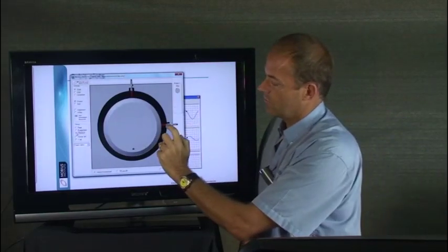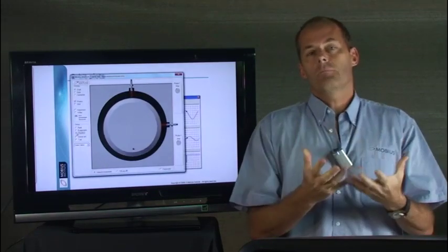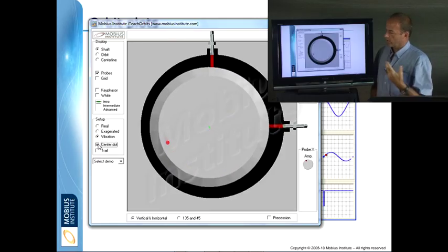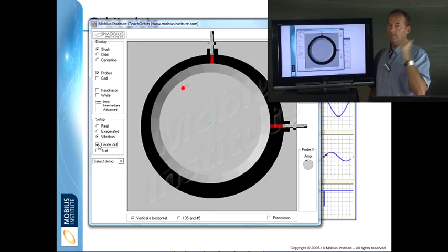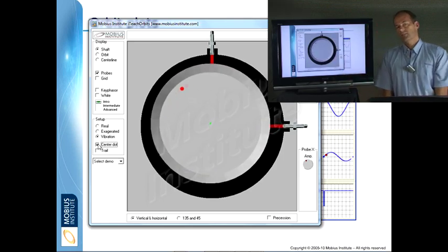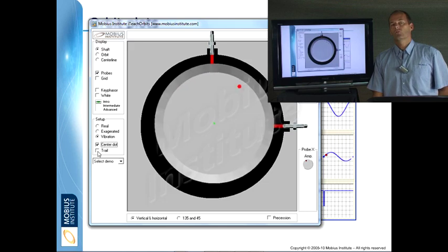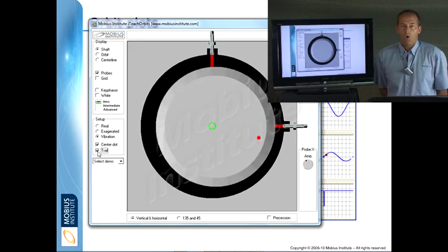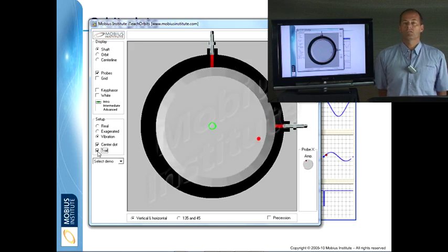Now even though we are measuring the distance between the probe and the surface of the shaft, think about it in terms of what the centre of the shaft is doing. And what I am going to do is put a little dot. You can see there is a green dot right in the centre of that shaft. And what I am going to do is make that green dot leave a little trail.